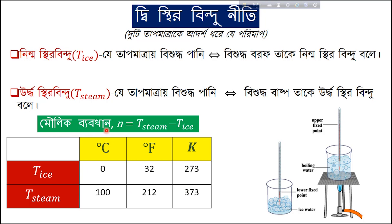From this we get a very important fundamental concept — the thermometric property. This fundamental definition is what we use in practical thermometry. Here, 'x' denotes the thermometric property, and it has about 180 divisions on the scale.